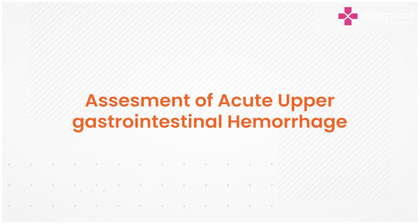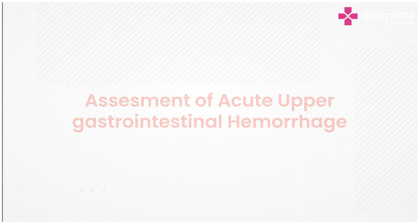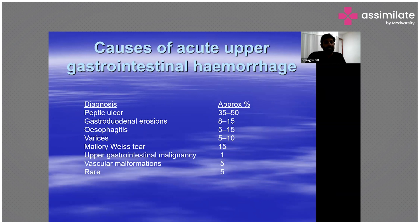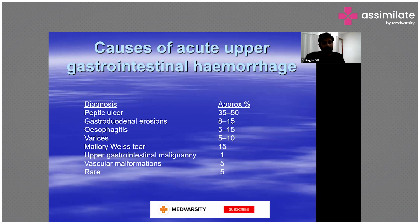Some of the causes for upper gastrointestinal bleeding — repeating it is probably the best way to learn. The most common cause for upper gastrointestinal bleeding is peptic ulcer disease, accounting for anywhere from one third to 50% of cases.